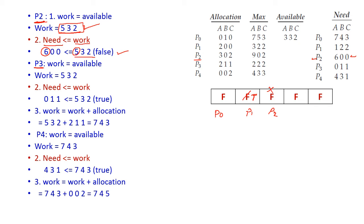Now let us come to P3. Current Work is [5, 3, 2]. We test whether Need[P3] is less than or equal to Work. The need for P3 is [0, 1, 1], which is of course less than [5, 3, 2]. So we can allocate the required resources for P3. P3 executes successfully and releases its allocated resources. These are added into Work: 2 + 5 = 7, 1 + 3 = 4, 1 + 2 = 3. Available resources are now [7, 4, 3].